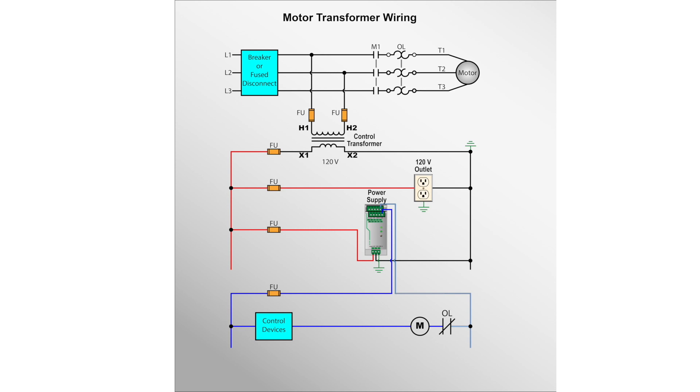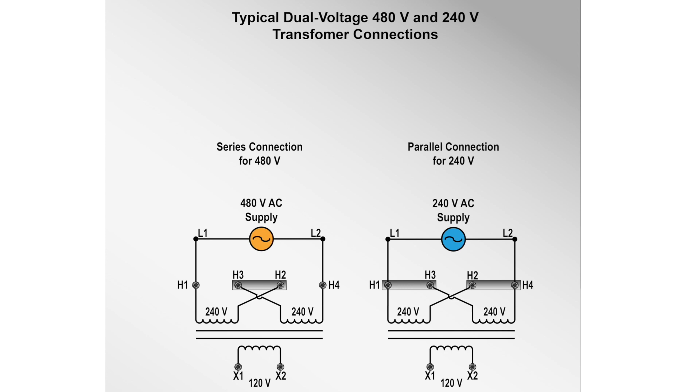The primary side, H1 and H2, will be the line voltage and the secondary, X1 and X2, will be the voltage for the control circuit. Control transformers are available in types such as single, dual, and multi-tap. The dual and multi-tap allow reduced control voltage from a variety of voltage sources to meet a variety of applications.